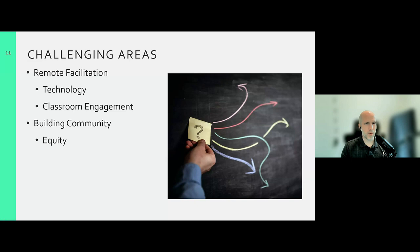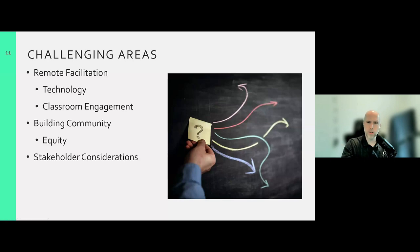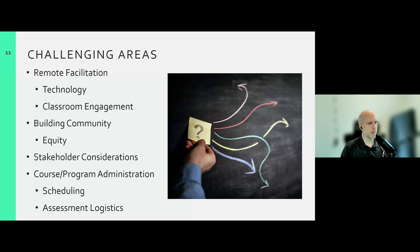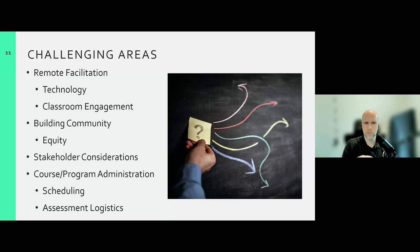Equity—perception of equity is absolutely key. If students don't consider the course to be fair, you will have problems. Fostering fairness and equity is critical, and this happens at the planning stage. Stakeholder considerations: think about all the different members who will touch your course—not just local administrators and directors, but across multiple institutions. And scheduling and assessment logistics—even simple questions like how are we going to get exams from one location to another for grading, and what kind of delay does that add?